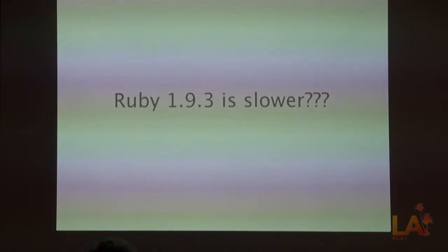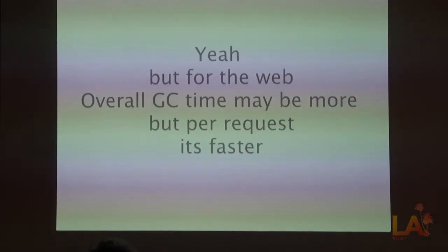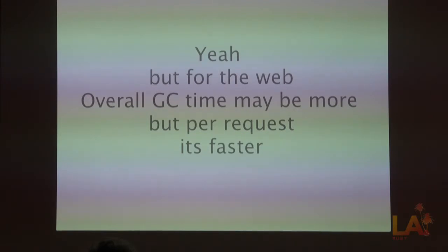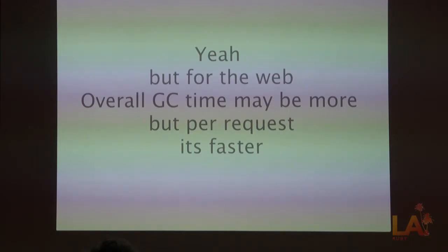I think for the web, overall GC time may be longer across the life of your server, but per request you're looking at a better average time — more consistent. In the middle of a certain request, maybe the previous request didn't trigger GC so it was quick, but then the next request comes in and suddenly — boom — 500 milliseconds of GC. The case he was making is: reduce average GC time so you don't get these spikes in response times in your apps.